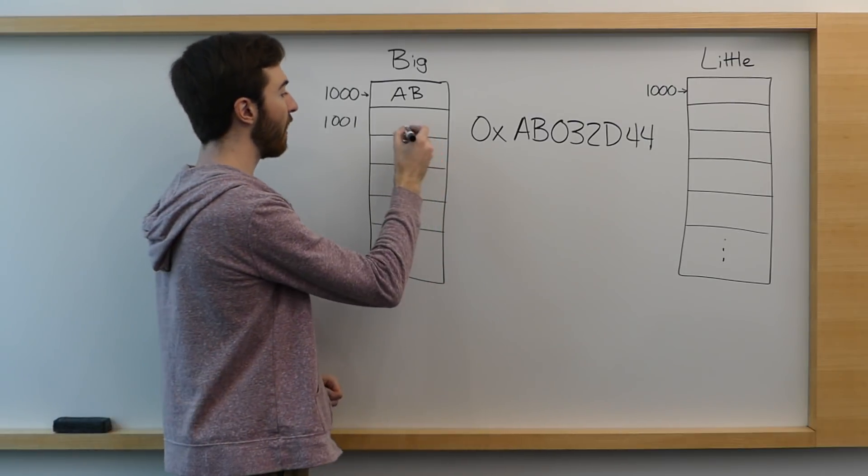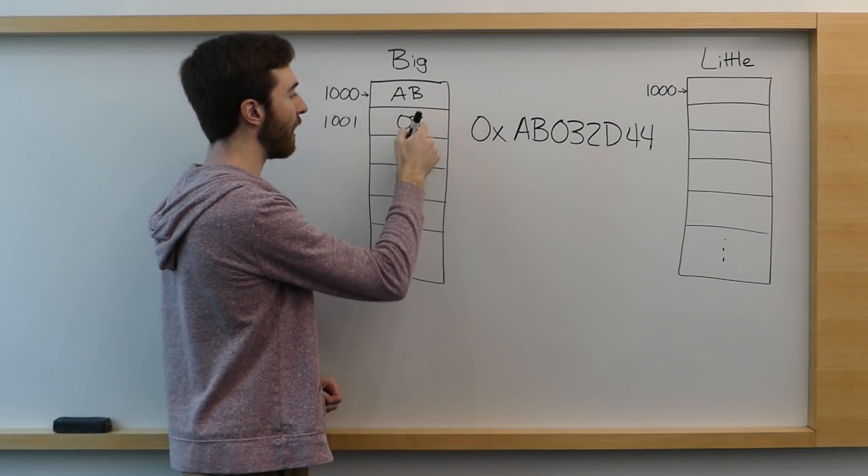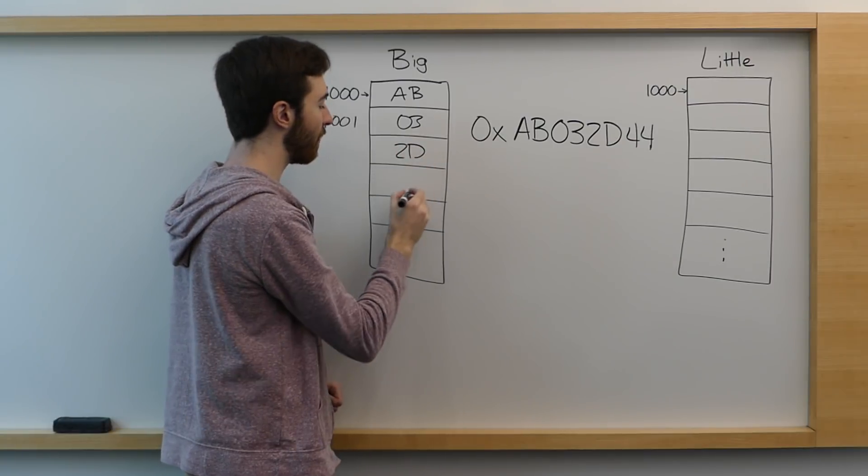Each of these blocks can hold a single byte, and this number would be stored as AB032D44.